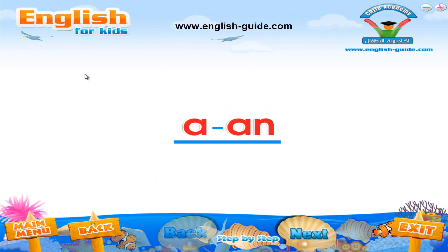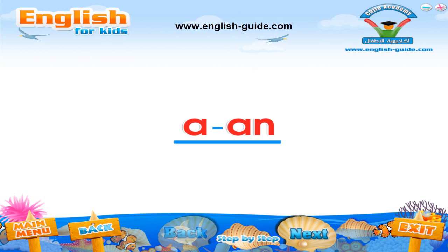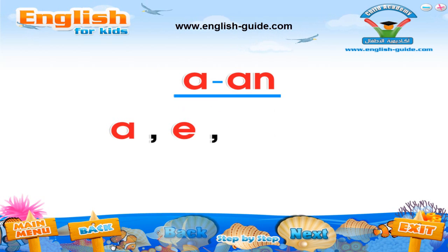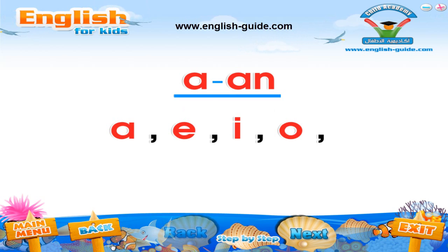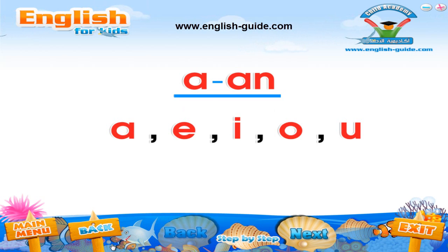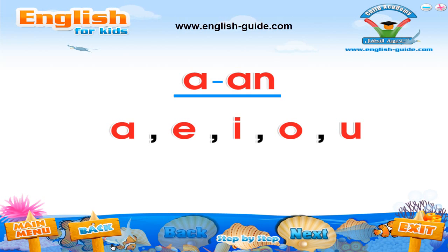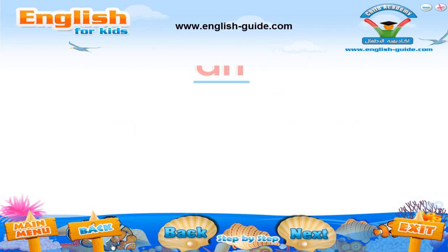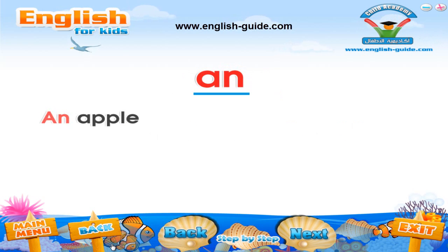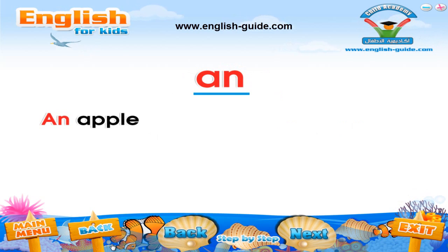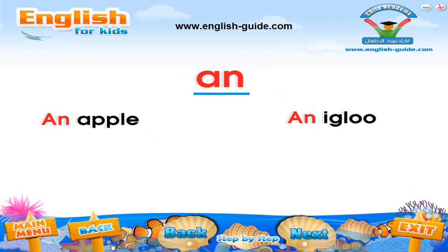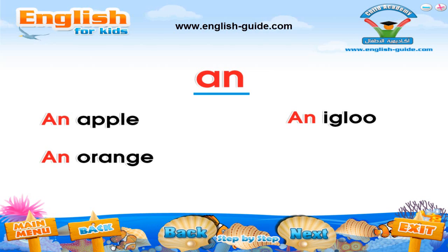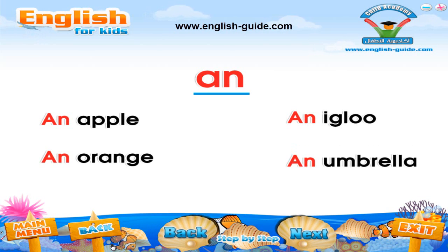A, an. If a word begins with a vowel — a, e, i, o, or u — we use the word 'an' before it. For example: an apple, an igloo, an orange, an umbrella.